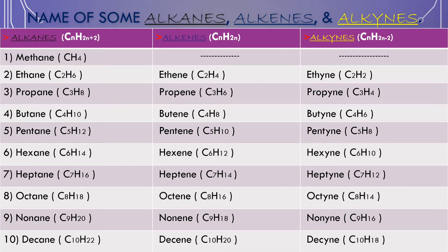Alkenes have the general formula CnH2n. The names of alkenes include: ethene, propene, butene, pentene, hexene, heptene, octene, nonene, decene.